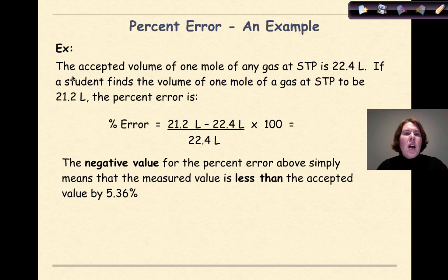So let's look at an example. The accepted volume of one mole of any gas at STP is 22.4 liters. If a student finds the volume of one mole of gas at STP to be 21.2 liters, the percent error is, so we have our percent error formula. Percent error equals 21.2 liters, this is the student's measured value, minus 22.4 liters, this is our accepted value, divided by the accepted value of 22.4 liters times 100. If we work that out, we'll get negative 5.36 percent.